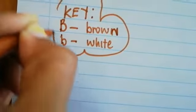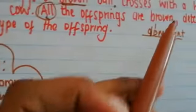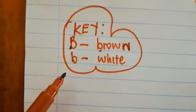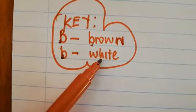So this is your key here. Capital letter B, because it's dominant, is going to represent brown. And small letter b, because it's recessive, is going to represent white.